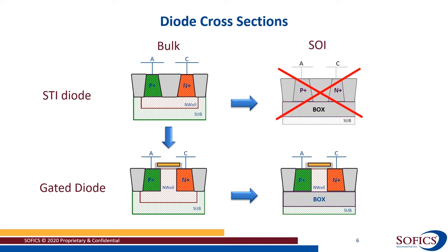Looking at SOI: on the top left you see the typical STI diode in bulk, but you cannot easily translate that to SOI because the buried oxide blocks the path where current should flow from anode to cathode. In bulk you can construct a gated diode where the STI between anode and cathode is removed, with only a gate on top to block the STI during processing. This type of gated diode can be translated to SOI, as shown on the bottom right, and this is the diode discussed in further slides.